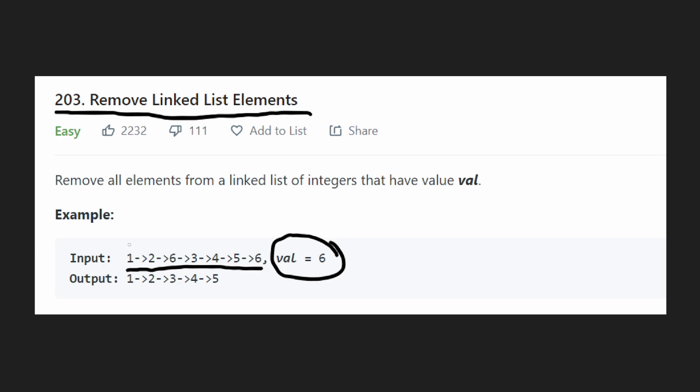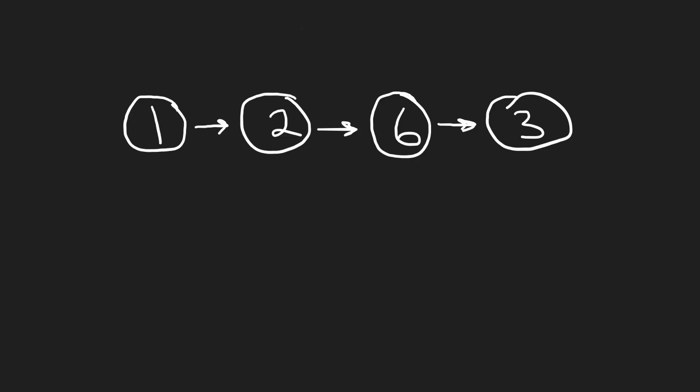Well, we can just check. Okay, 1, not removing that, 2, not removing that, 6, got to get rid of it, 3 is good, 4 is good, 5 is good, but this last 6 has also got to go. And then we update some pointers and the new output is over here.